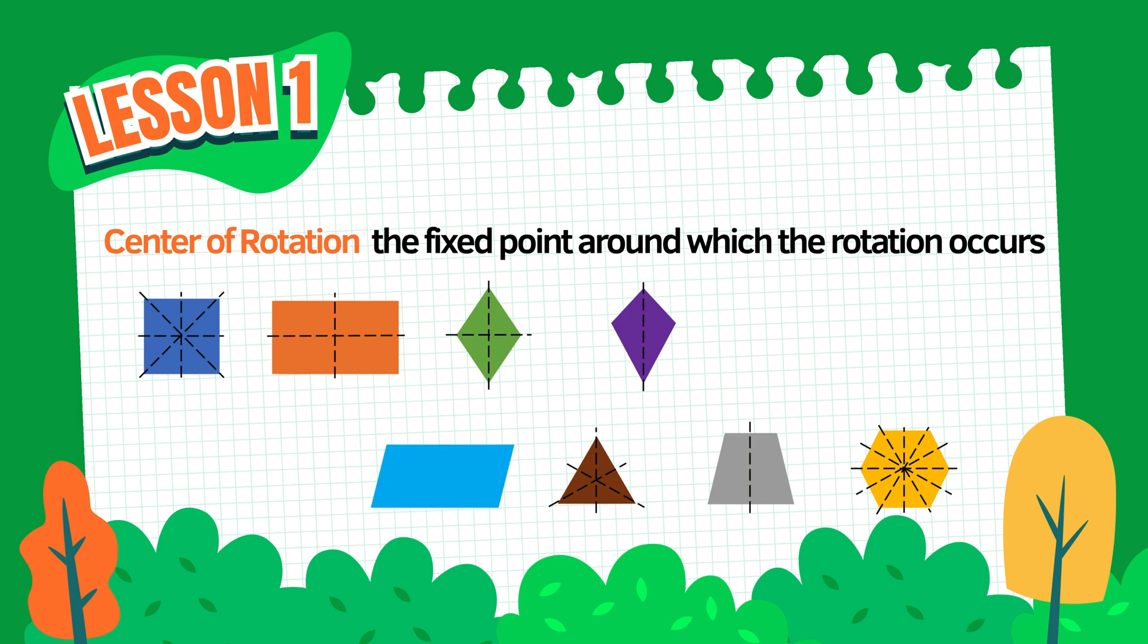This central point allows the hexagon to rotate multiple times and still look the same. So remember, the center of rotation is often found at the intersection of the diagonals, and it's the key to understanding how and why a shape rotates in symmetry.